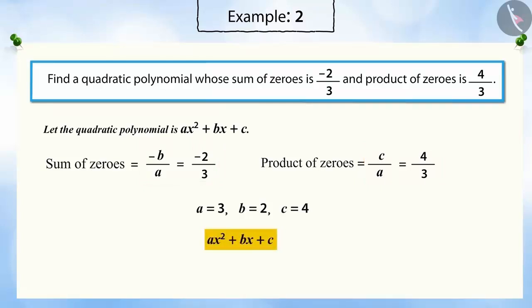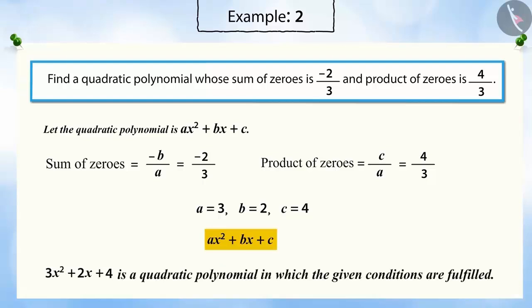Substituting the values of a, b and c, we get a quadratic polynomial 3x squared plus 2x plus 4 where we get a quadratic polynomial in which the given conditions are fulfilled.